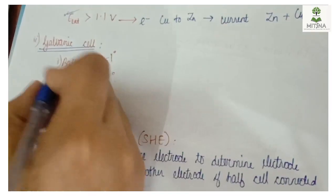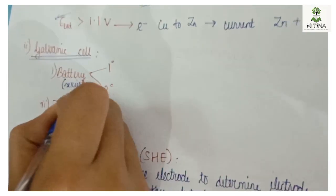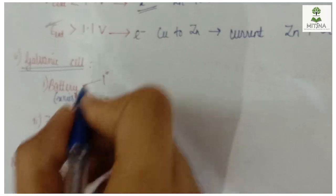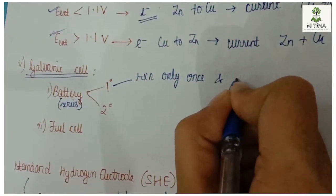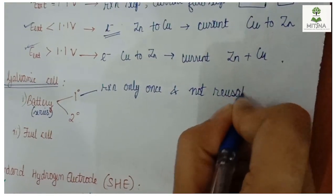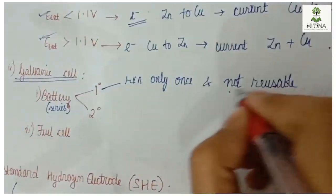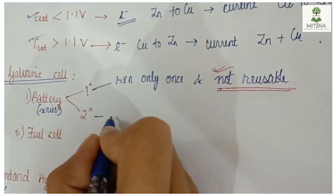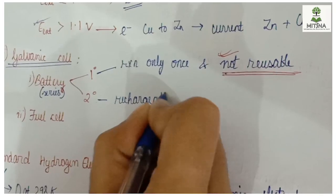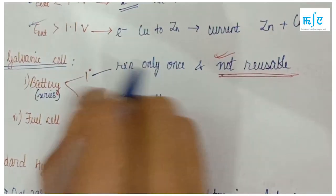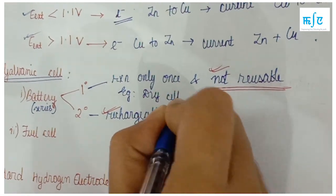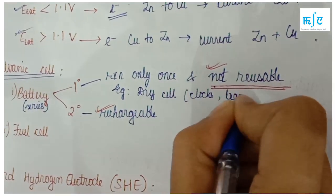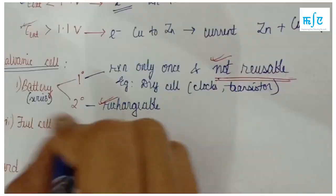A battery is one cell or more cells connected in series. Batteries are classified as primary and secondary. Primary batteries are used only once and are not reusable. Secondary batteries are rechargeable. A primary battery example is the dry cell.